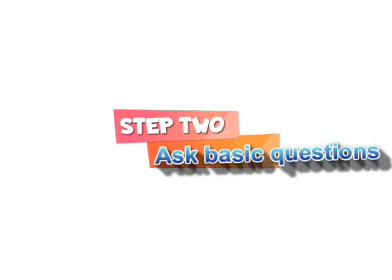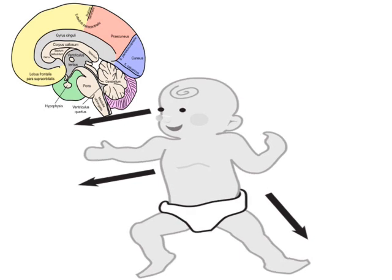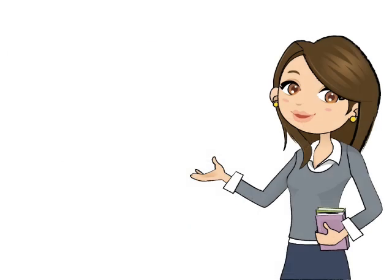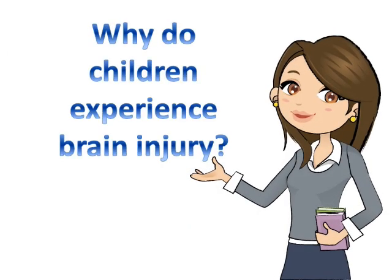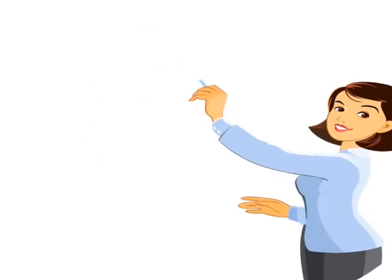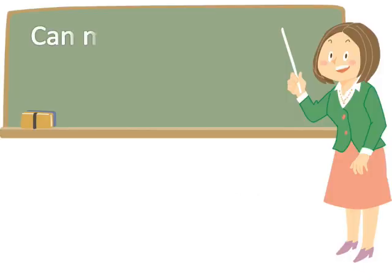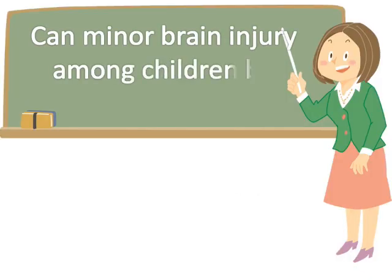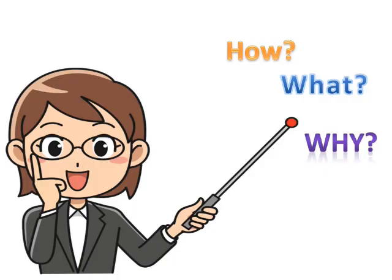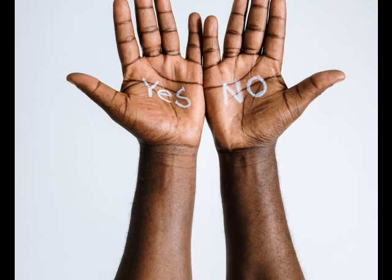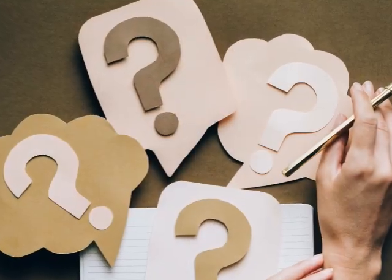Step 2: Ask basic questions that would guide your study. For example, using the given topic, we could ask: why do children experience brain injury — that is, the cause of brain injury. Knowing the reasons will help ascertain the prevention of brain injury. How can brain injury among children be prevented? In what ways can minor brain injury among children be treated? Let your questions revolve around how, what, and why. These questions will guide you in your search for relevant literature. Meanwhile, avoid asking yes or no questions.